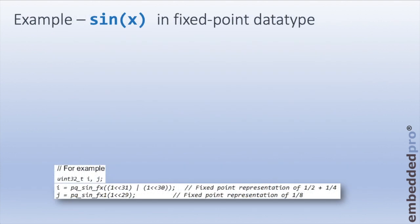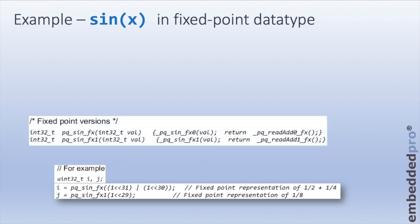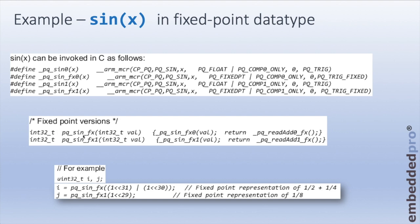Here's a real-world implementation of sine(x) in fixed-point. In the software, we declare two uint32 variables, i and j. In this example, i is the sine for the value 3/4 and j is the sine for 1/8. The functions power_quad_sine_fx and power_quad_sine_fx1 are passed to Power Quad 0 and Power Quad 1 respectively. Those function definitions use hash defines provided in MCU Expresso IDE, and of course they make use of the ARM Cortex-M33 instruction MCR — move from Cortex-M33 register to a coprocessor register.